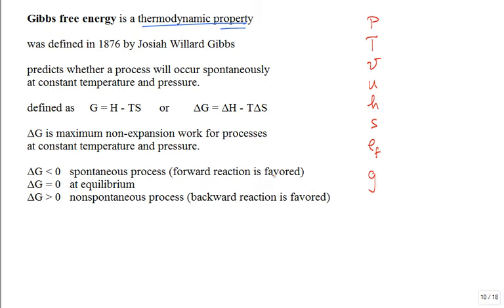Gibbs free energy was introduced way back in 1876 by Josiah Willard Gibbs at Princeton University — probably the greatest American thermodynamicist. This property is useful in predicting whether a process will occur spontaneously at a given fixed constant temperature and fixed constant pressure.